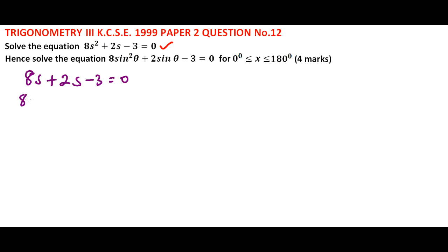This is 8s² plus, we have 6s minus 4s minus 3 equals 0. So we have to factor out 2s here.